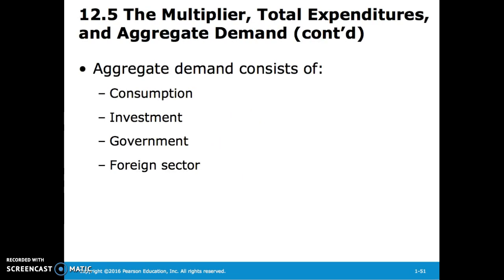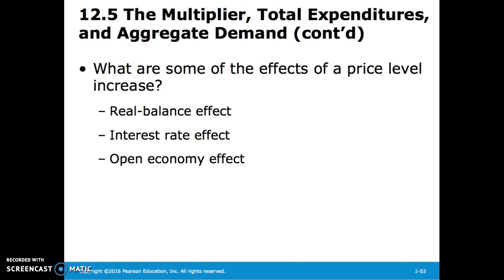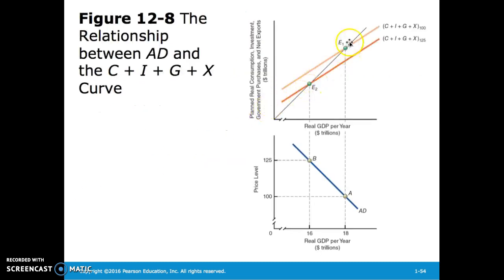Recall that aggregate demand consists of consumption, investment, government spending, and the foreign sector or net exports. There is a major difference between the aggregate demand curve with the price level constant and an aggregate demand curve drawn with the price level changing. To derive the aggregate demand curve from the C+I+G+NX curve, we must now allow the price level to change. A price level increase affects real balance effects, interest rate effects, and open economy effects. As this curve adjusts downward, equilibrium is reached at a higher price level.